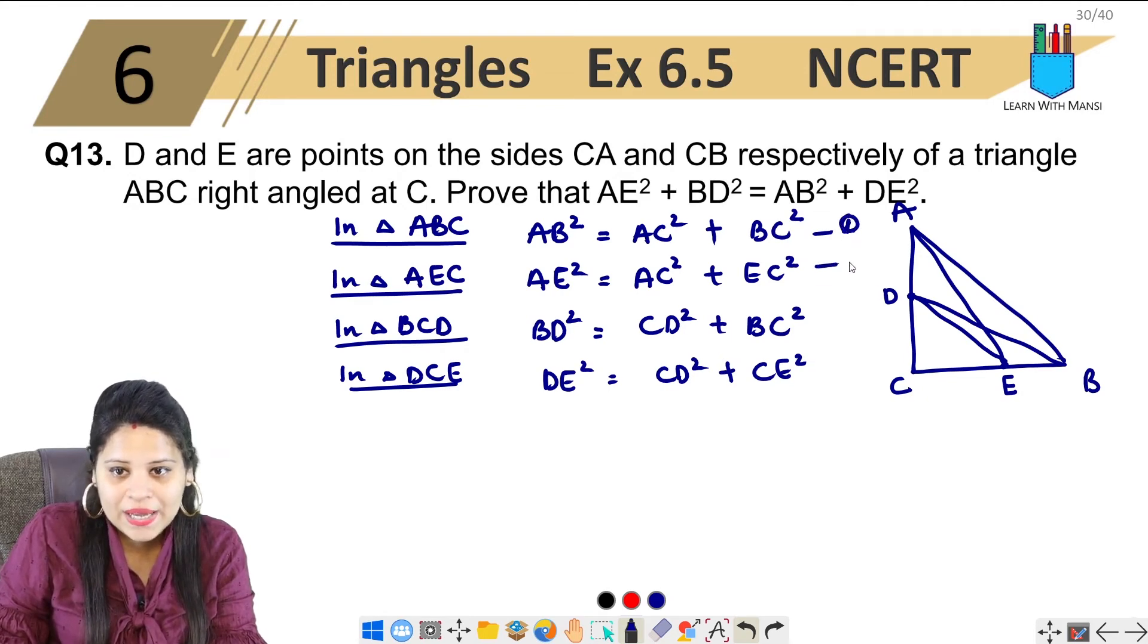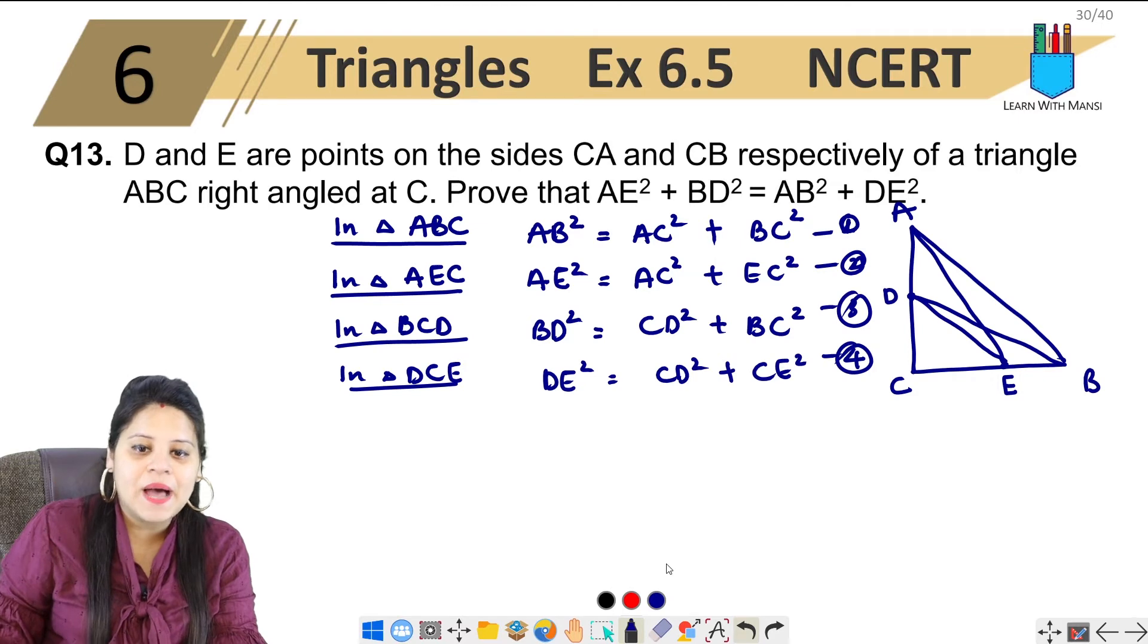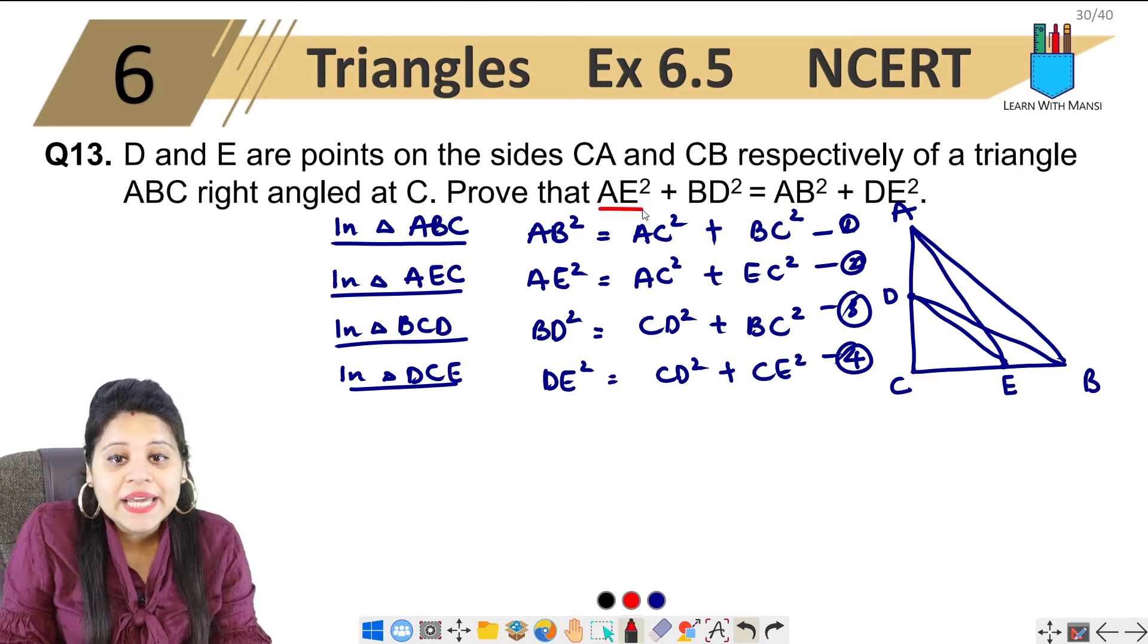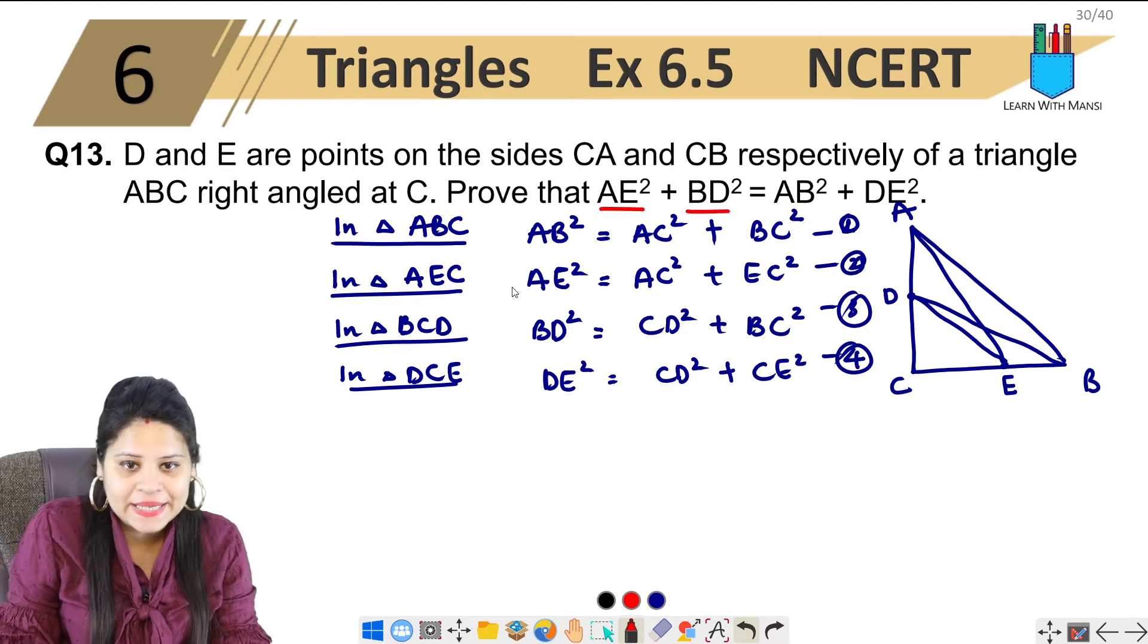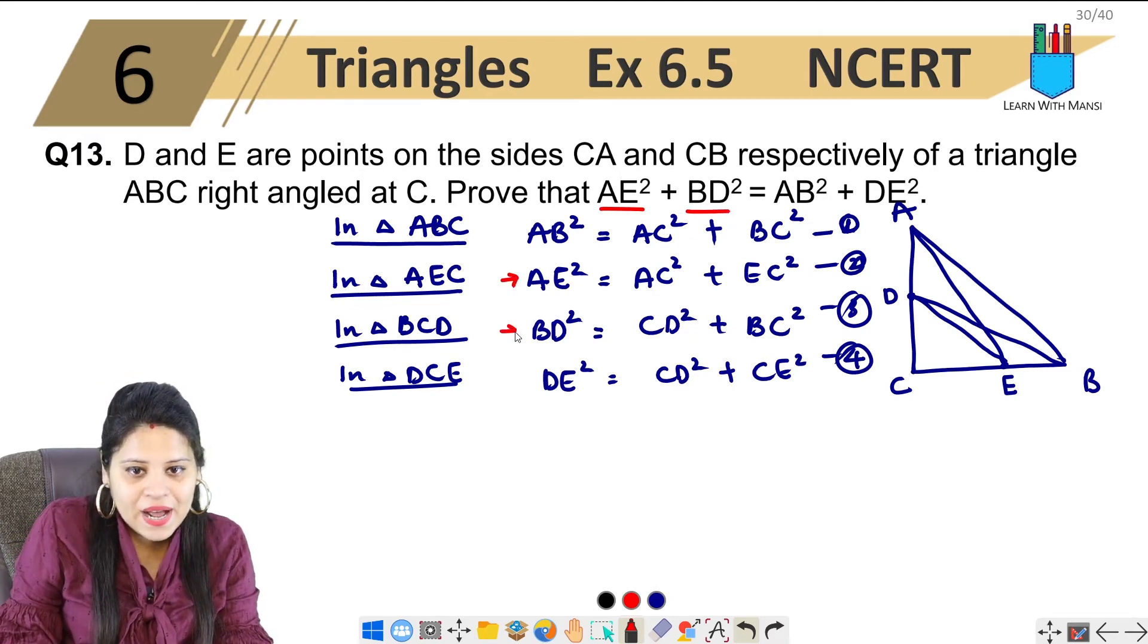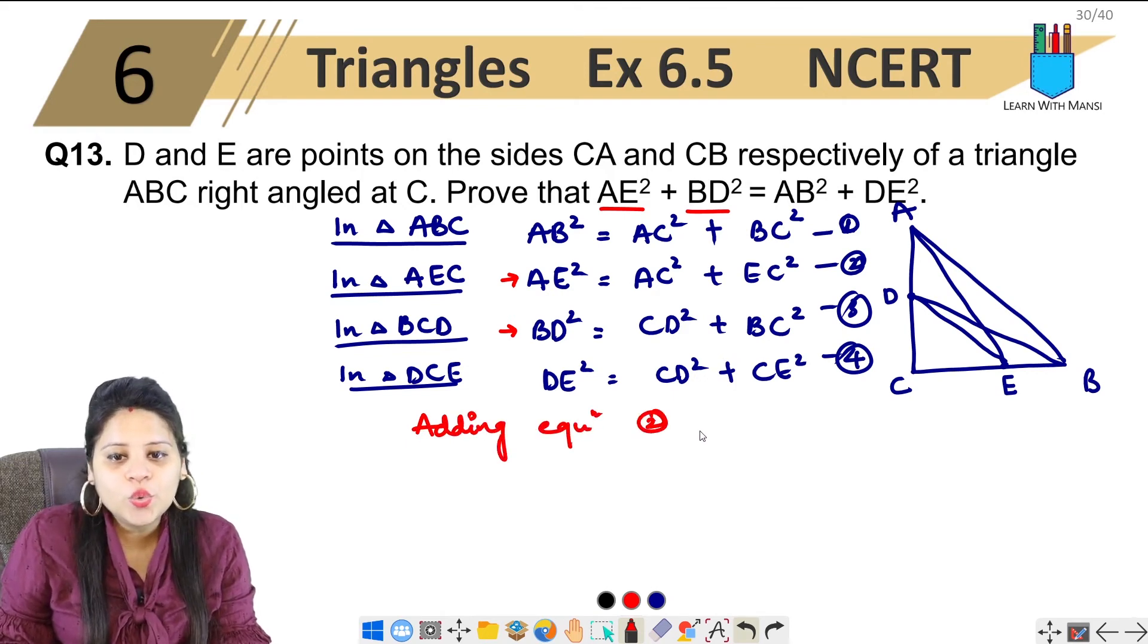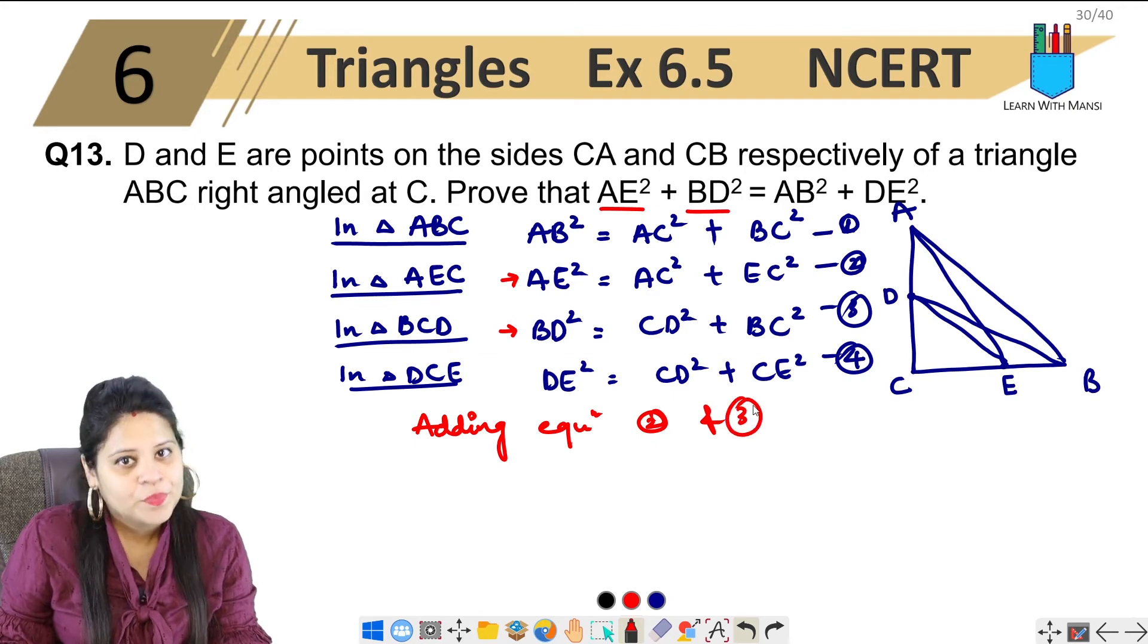Okay, so here are four equations. Let's call this one, two, three, four. Now here, first I need AE plus BD. This is AE, this is BD. So adding equations two and three.